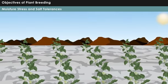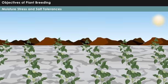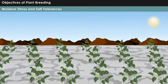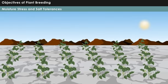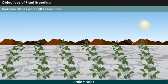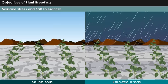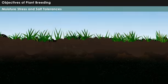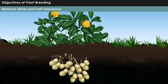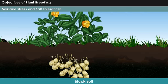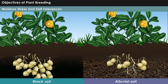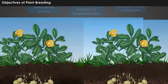Moisture stress and salt tolerance: Cultivating crop varieties suitable for saline soils and rain-fed areas can help to increase food production in India. For instance, groundnut plants cultivated in black soil produce more yield than those grown in alluvial soil.